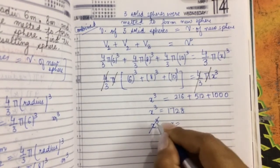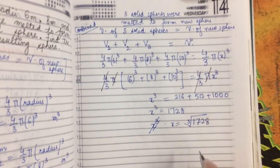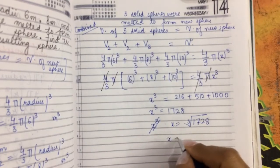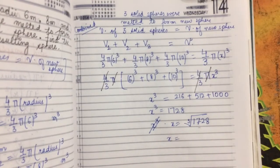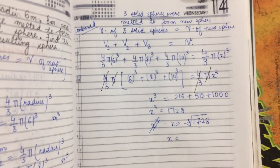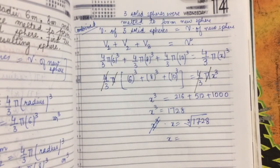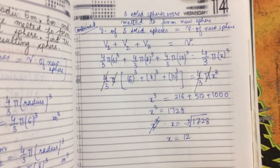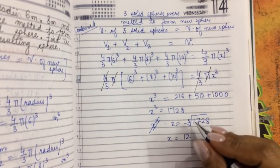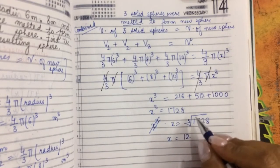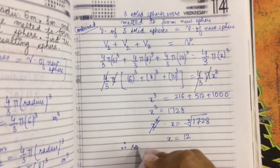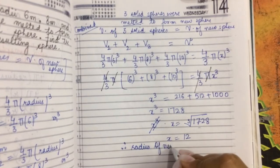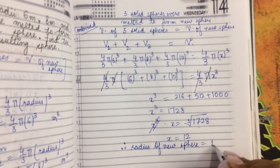Taking the cube root: x = ∛1728. Prime factorizing 1728 and arranging factors into triplets, each triplet gives one factor. The cube root comes out to be 12 — since 12³ = 1728. So the radius of the new sphere is 12 meters.